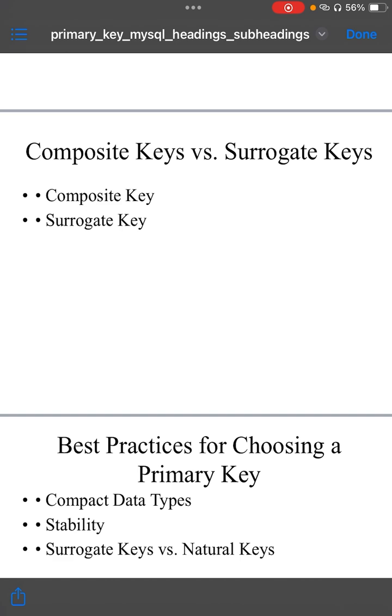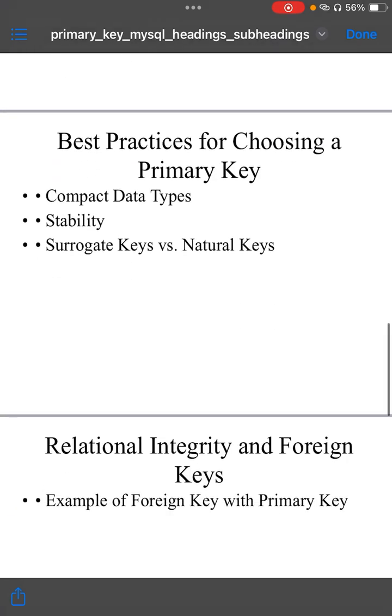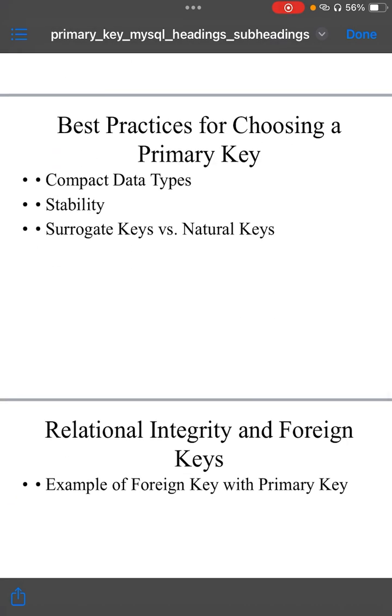Now let's understand best practices for choosing primary key. Compact data types: it is best to choose a compact, efficient data type like int or big int for primary key, as these data types are easier to index and require less storage space. Avoid using large data types like varchar as primary key, as they can slow down performance.